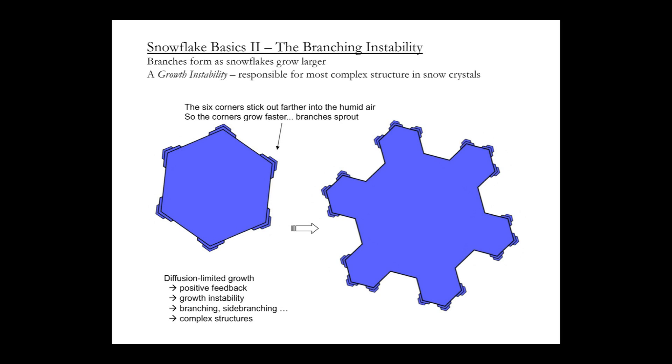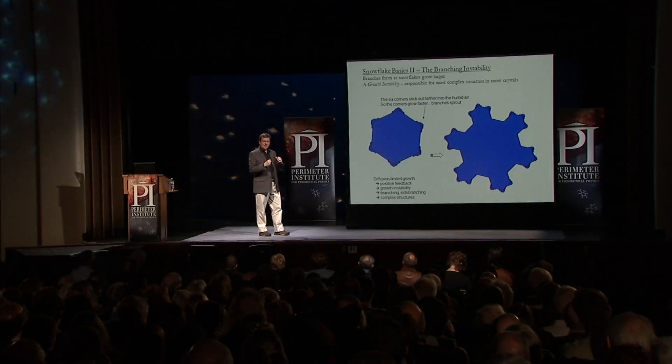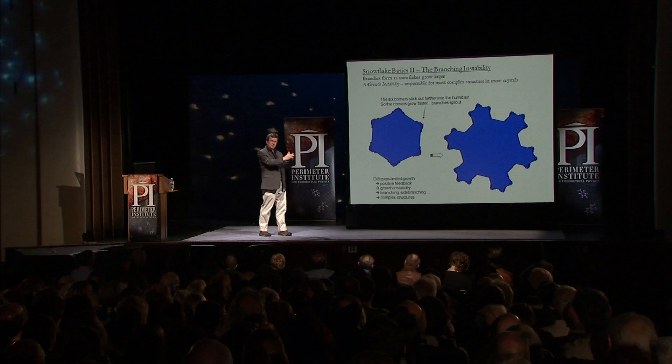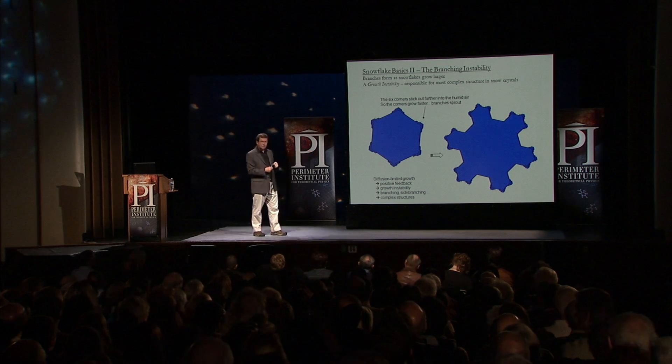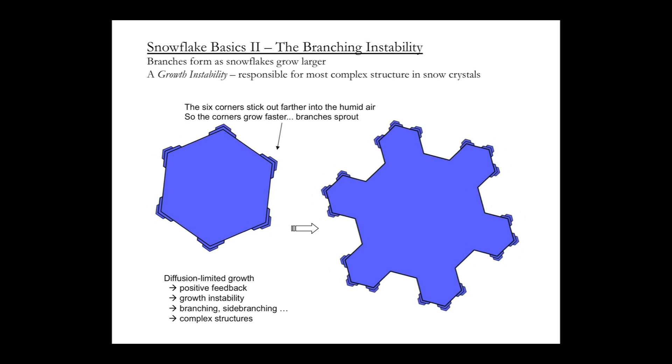As the snowflake gets larger, it undergoes a branching instability — a positive feedback. You've got a hexagon and the water molecules have to diffuse through the air to get to it. The corners stick out a little farther into the humid air, so they grow a little faster. That makes them stick out even more, so they grow even faster, and so on. Starting with a hexagon, you can sprout branches. With time, you can also see side branches form.